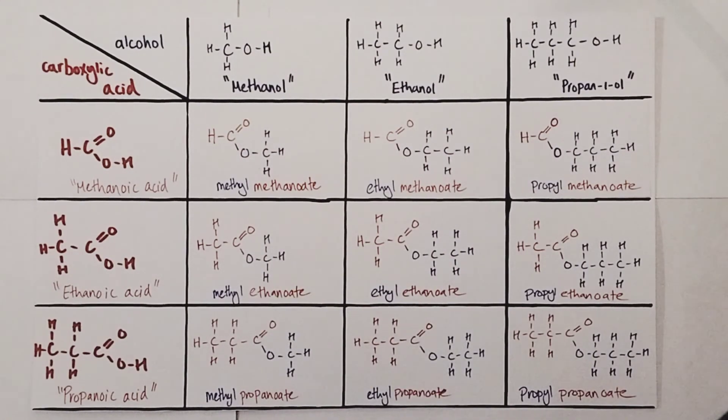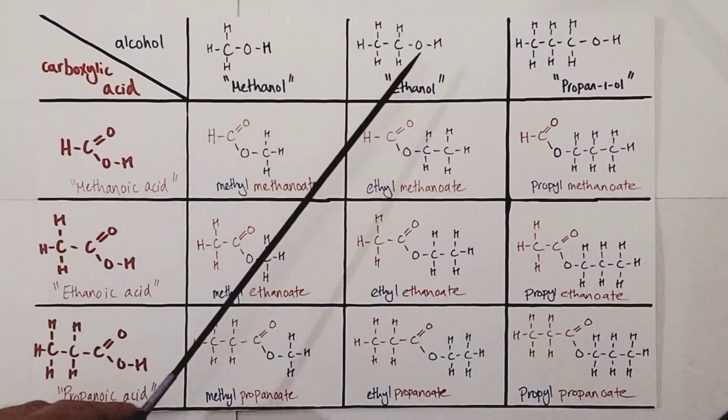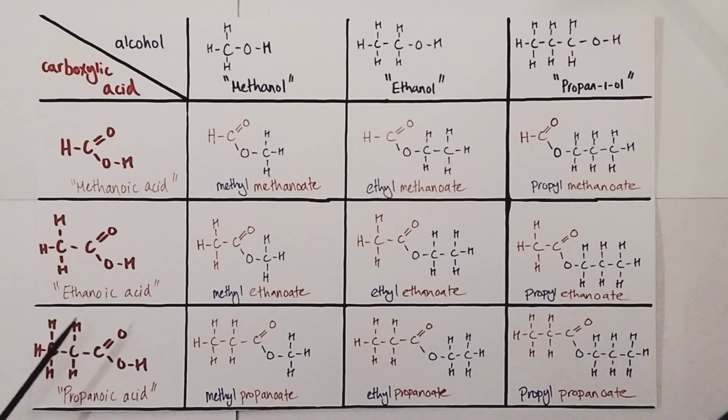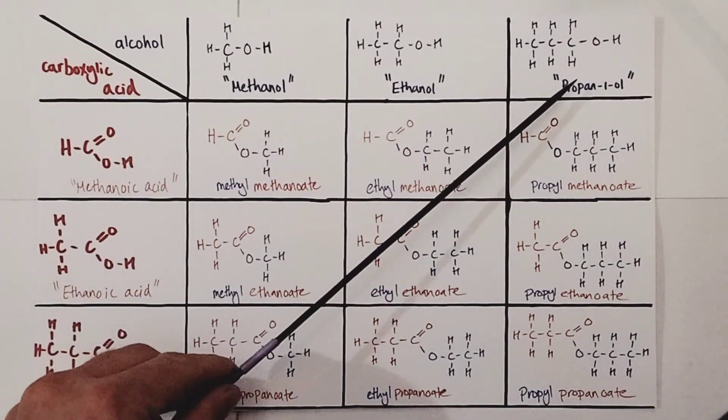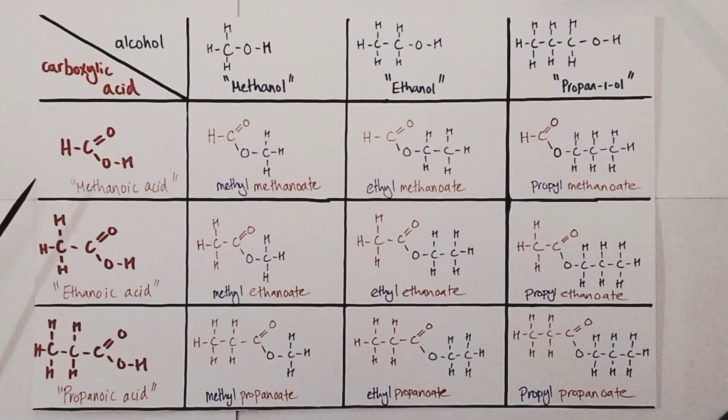I'd like to finish with some mass practice. I've made here a table with three alcohols and three carboxylic acids: methanol, ethanol, and propan-1-ol, and methanoic acid, ethanoic acid, and propanoic acid, so I can build lots and lots of esters very quickly. We can really get used to practicing the structures and naming of these esters.